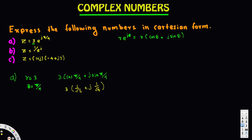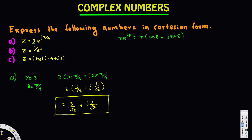If we multiply these by 3, this gives us 3/√2 plus j·(3/√2). So the final answer for part a is -3/√2 + j·3/√2. That's the conversion of this polar form to rectangular form.